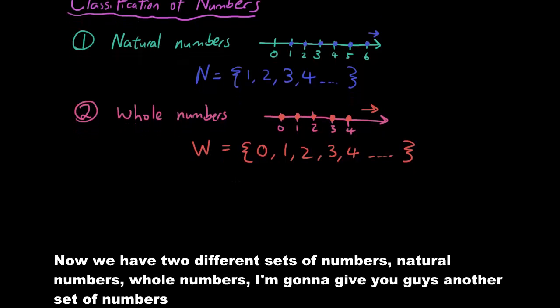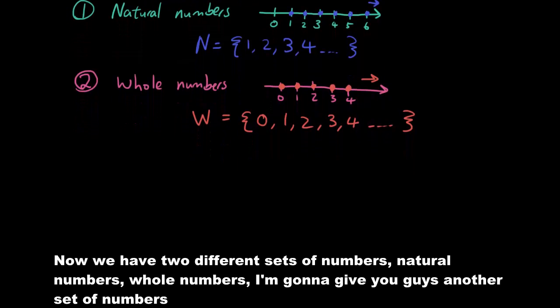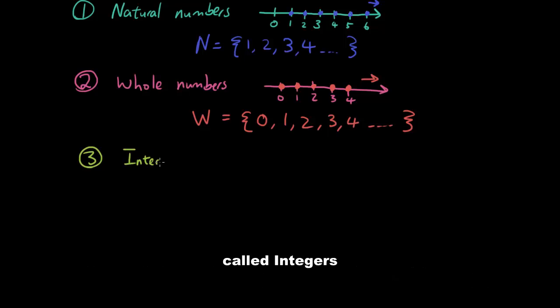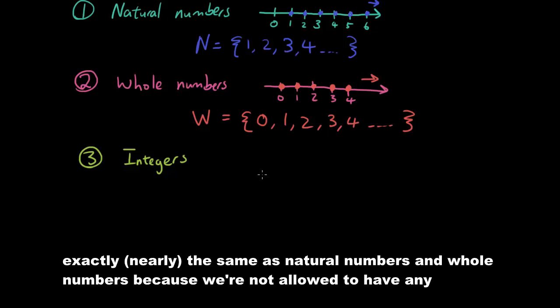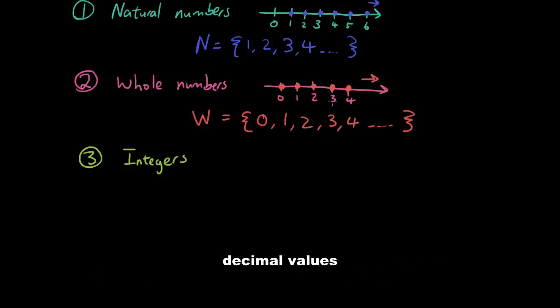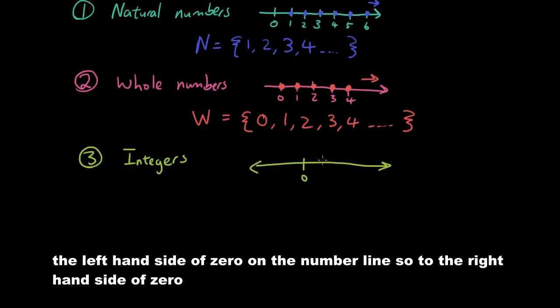Now we have two different sets of numbers - natural numbers, whole numbers. I'm going to give you another set of numbers called integers. Integers are basically exactly the same as whole numbers and natural numbers because we are not allowed to have any decimal values.